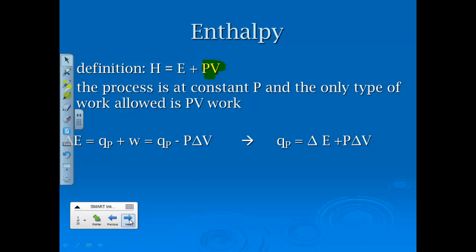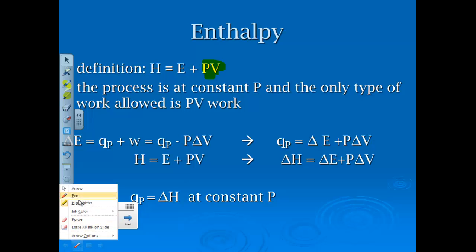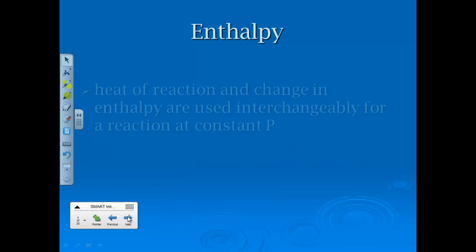But if we know that energy is equal to the heat plus the work, and we kind of rearrange some equations, what we ultimately end up with is that we can say that at constant pressure, the heat or energy of a system is equal to this delta H or this enthalpy unit.